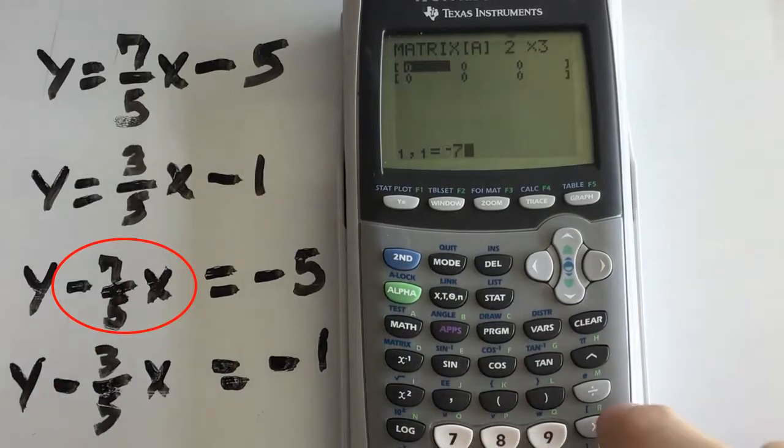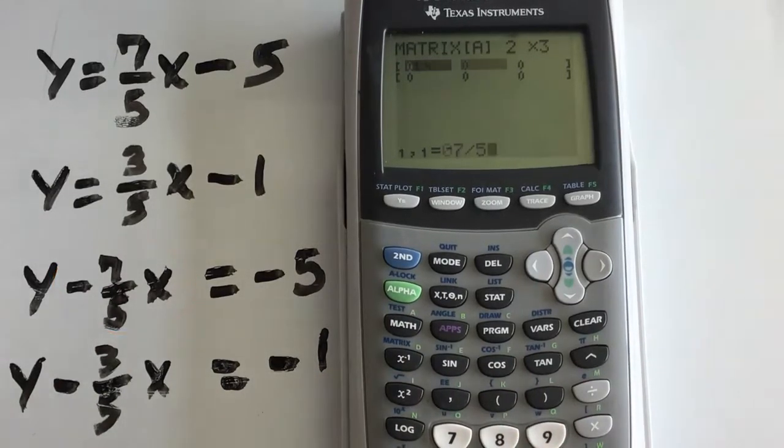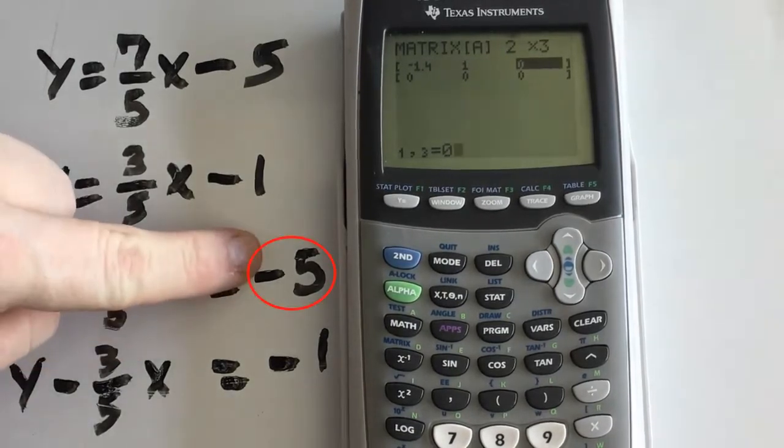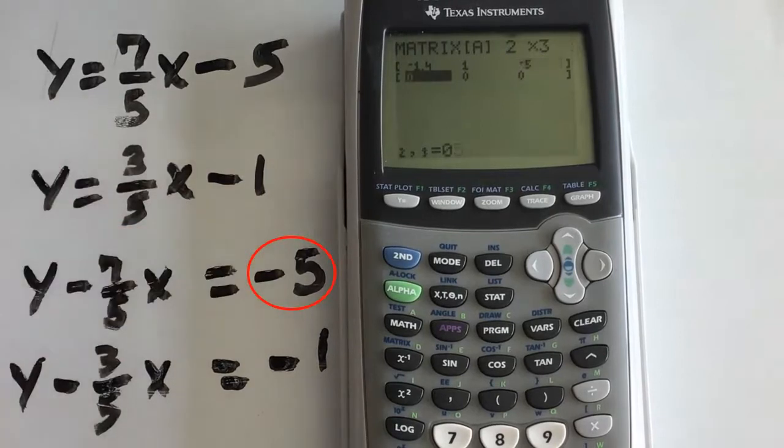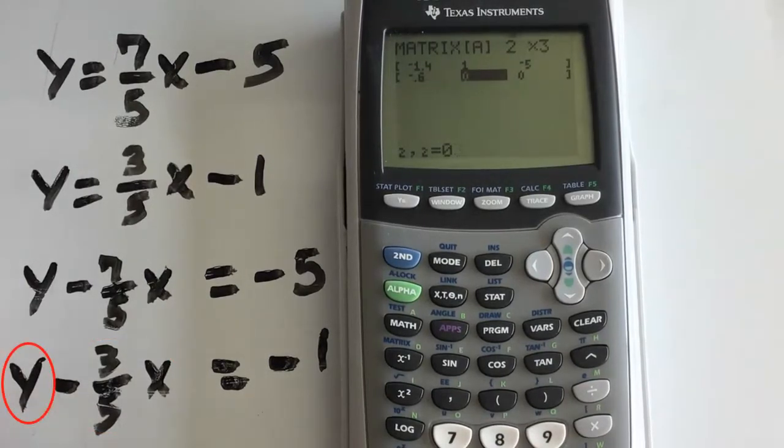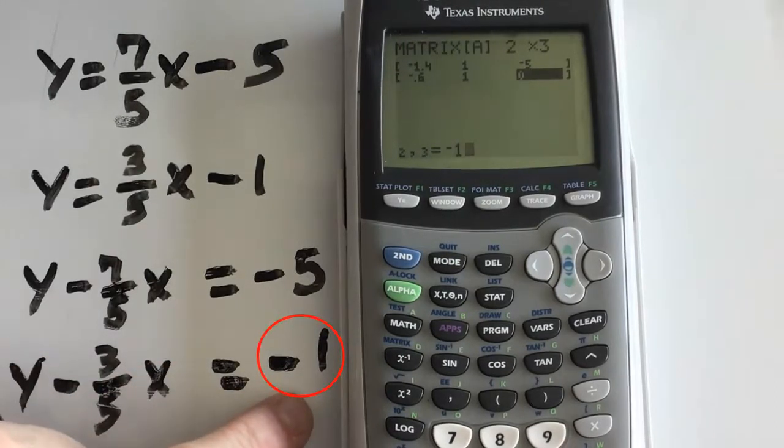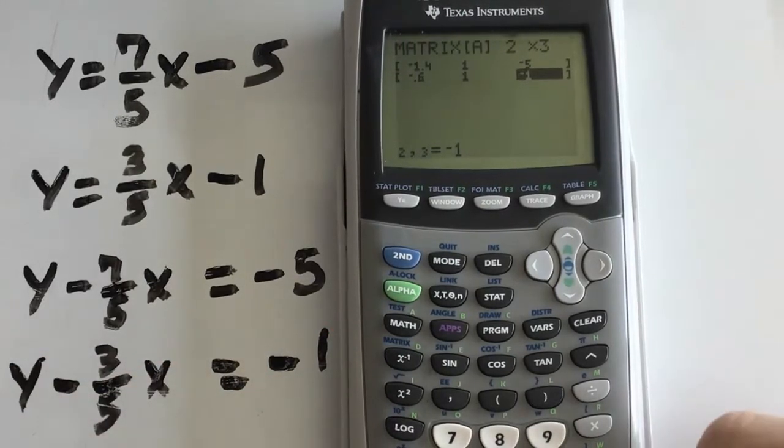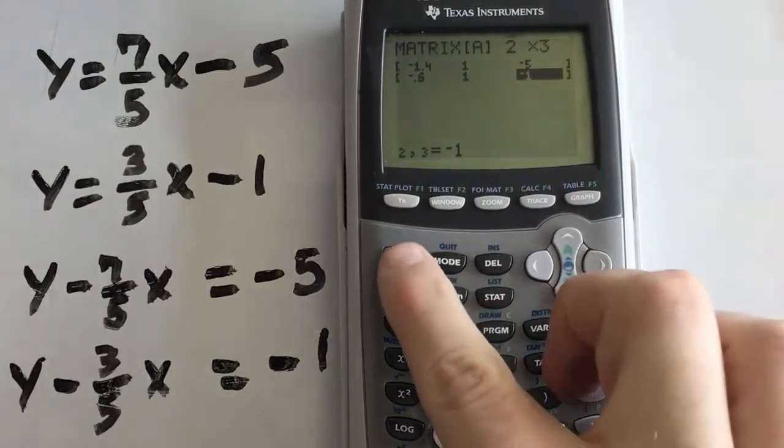So, negative 7 divide 5. And then my Y value here is 1. And the solution is negative 5. Then my next X value here is negative 3 fifths. Positive 1. And now negative 1. And so, now that I've got everything typed in, I'm going to exit out. So, second, quit.